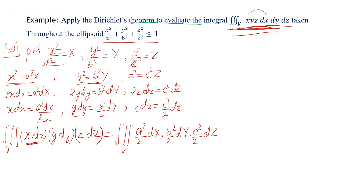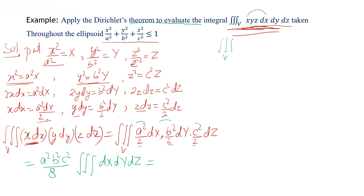Since a², b², c² are constants, we factor them out: the integral becomes (a²b²c²/8) times the triple integral of dX dY dZ. To apply the Dirichlet theorem, we express the integrand as X^(1-1) Y^(1-1) Z^(1-1) dX dY dZ, which corresponds to p = 1, q = 1, r = 1.